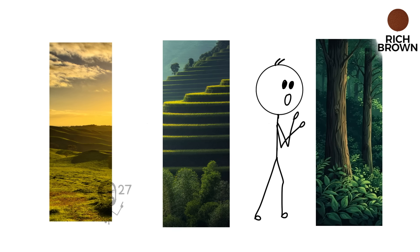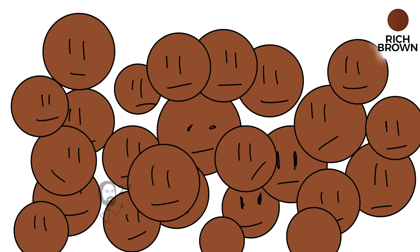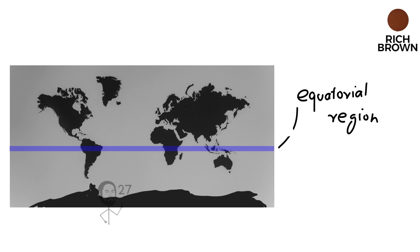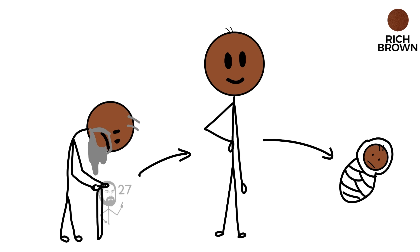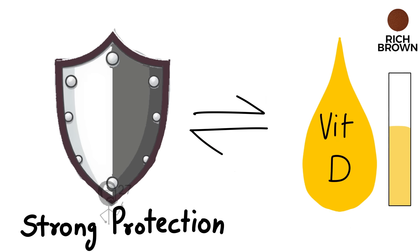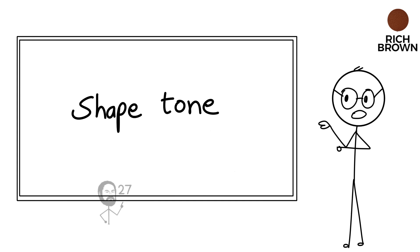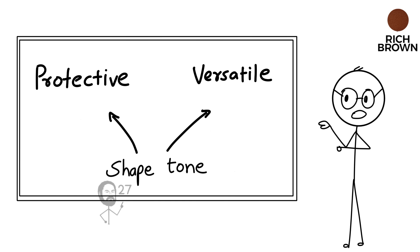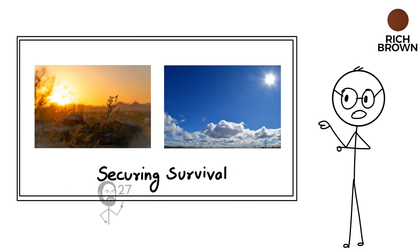It preserves the resilience needed to endure intense sunlight while allowing the body to respond effectively to shifts in climate, altitude, or vegetation density. This made populations with rich dark brown skin especially adaptable across wide equatorial and subtropical regions. Over generations, the interplay of strong protection and moderate vitamin D synthesis shaped a tone that is both protective and versatile, securing survival in places where solar intensity was high yet not always constant.